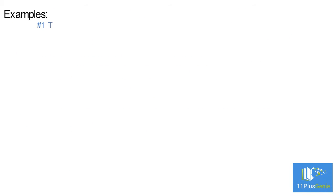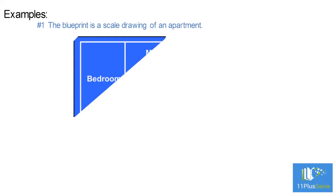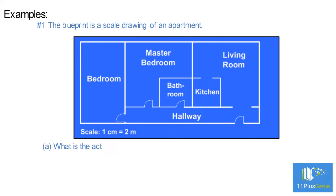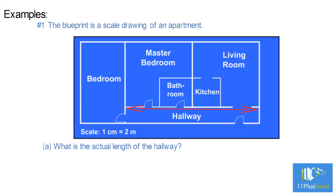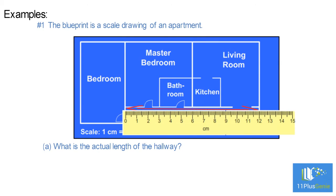Example 1: The blueprint is a scale drawing of an apartment. What is the actual length of the hallway? Measuring from one side of the hallway to the other gives twelve centimeters. Since one centimeter equals two meters, twelve centimeters equals two times twelve meters, which equals twenty-four meters.